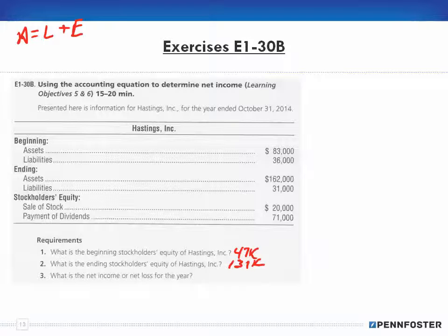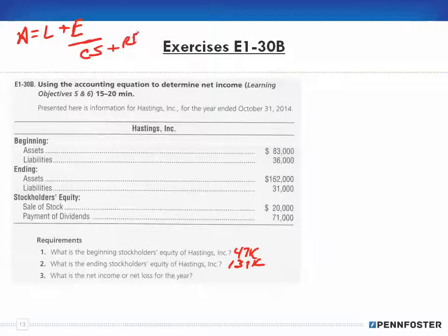Now, what is the net income or loss for the year? This becomes a little more complicated. When it comes to equity, don't think that all there is to equity is just common stock plus retained earnings. As you progress further, things like bonds and other items will end up in the equity section also. But for right now, we're thinking in terms of common stock and retained earnings. Just be aware that isn't all there is to equity — I could throw in preferred stock and other things. But at this level, it's common stock and retained earnings.